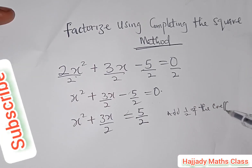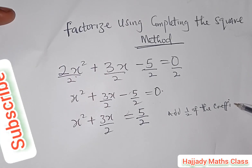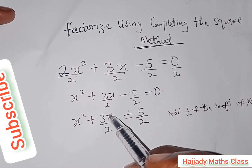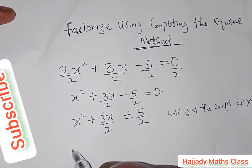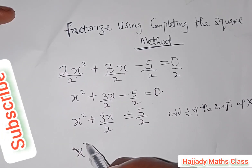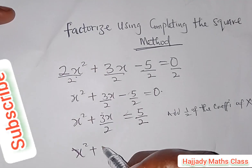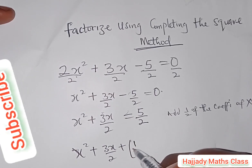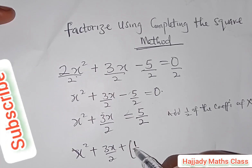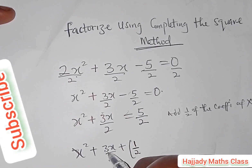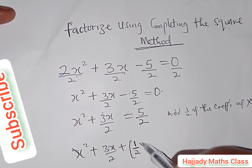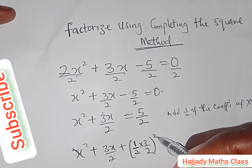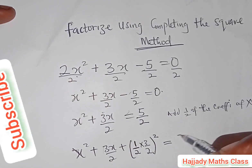We add half of the coefficient of x to both sides. The coefficient of x here is 3/2. So we take half of that coefficient — that means half times 3/2 — and we are going to square it.